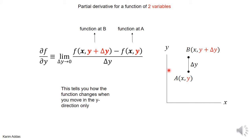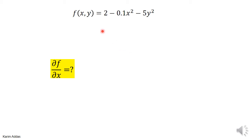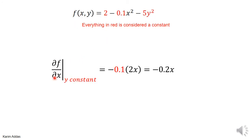For partial f by partial y, it's the same idea: start at point a with coordinates x and y, then move only in the y direction a distance delta y, arriving at point b with coordinates x and y plus delta y. Find the value of the function at point b, subtract the value at point a, divide by delta y, and take the limit when delta y goes to zero. In this case x is kept constant, so partial f by partial y tells you how the function changes in the y direction.